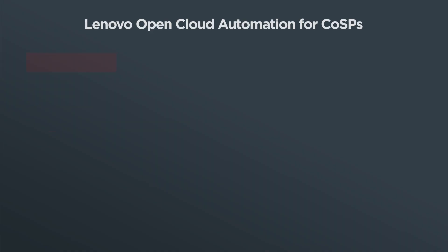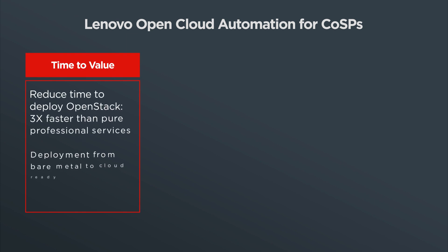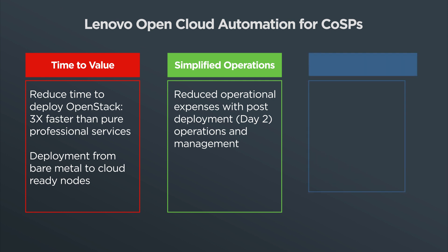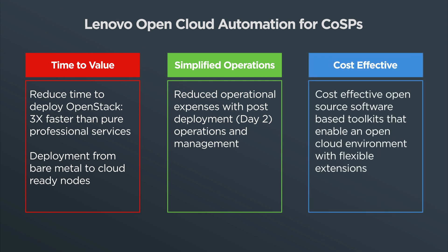Lenovo Open Cloud Automation is designed for both information and operational technology networks. It assists service providers to plan, deploy, and maintain cloud deployments, accelerating productivity. It benefits the customers through faster time-to-value, simplified operations, and reduced operational costs.